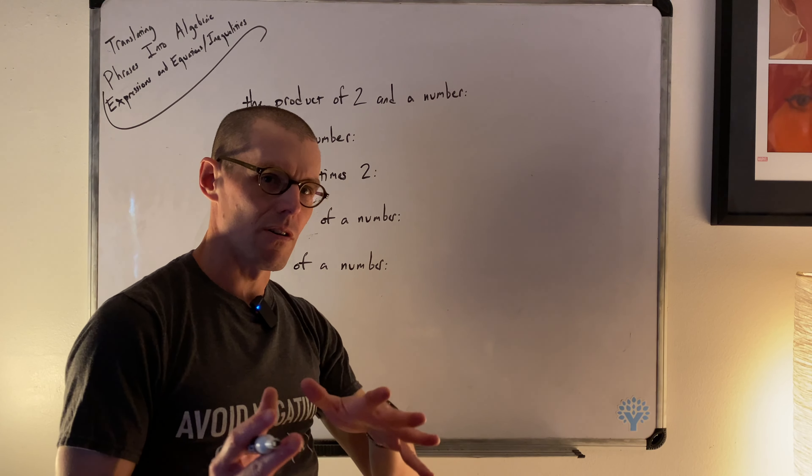Now, 'is greater than 10.' The language is being very precise: greater than, not greater than or equal to. So we have the strict inequality. Four less than twice a number is greater than 10 becomes 2x − 4 > 10. That's a step up in complexity.